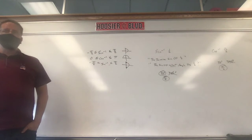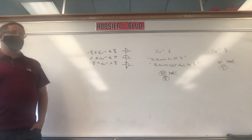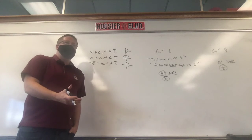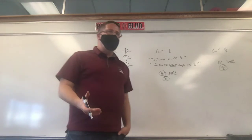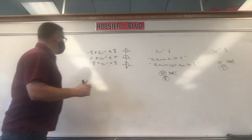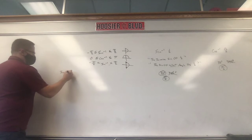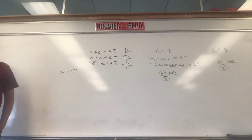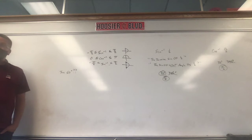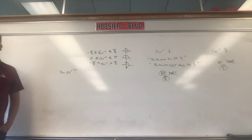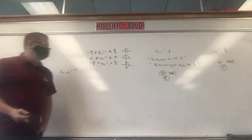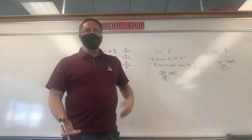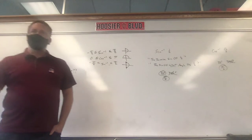Here's where it starts getting tricky. If these seem easy, remember: before, I give you the angle and ask for the trig function. Here, I'm giving you the trig function and asking for the angle. We're just working backwards.